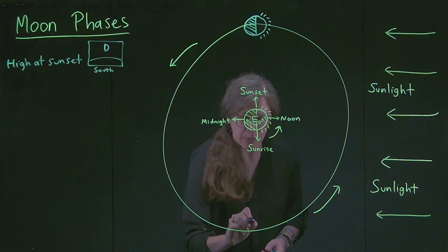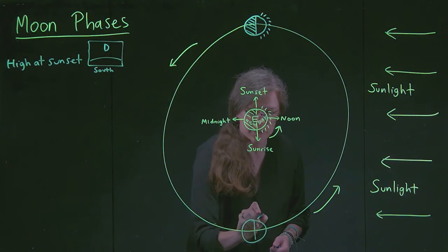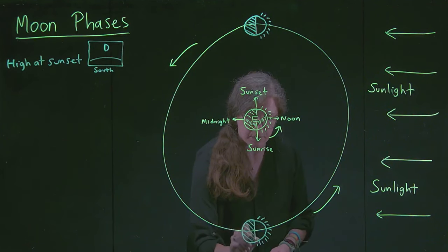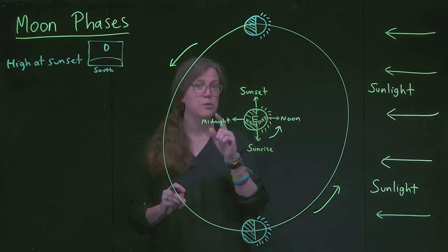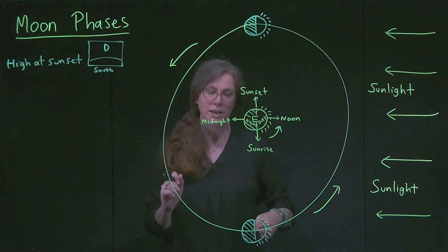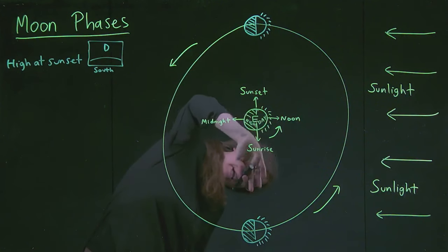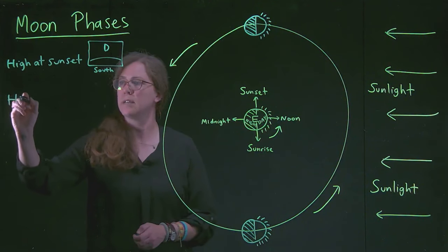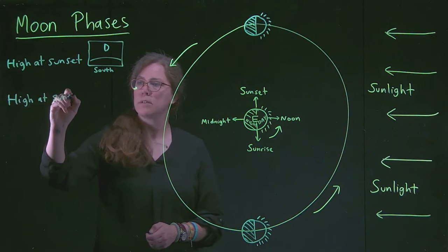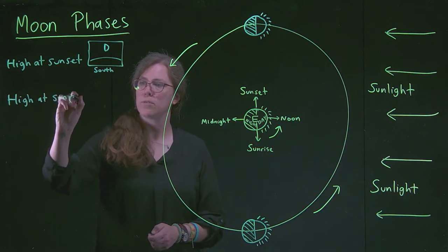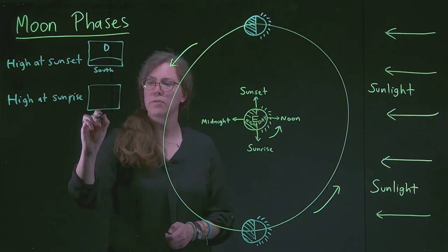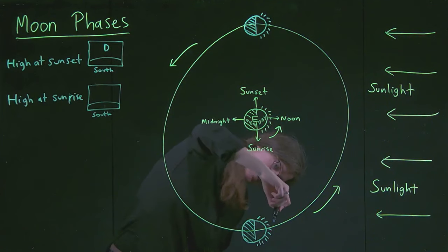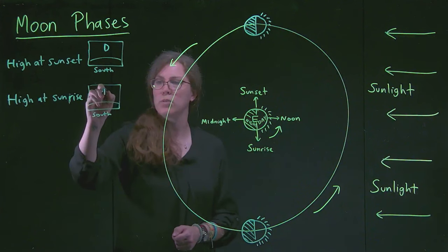If we think about the Moon on the bottom of our diagram instead, this is still the side that's lit up — remember the sunlight is coming in from the right — and this is still the side that is dark. If I try to view it from that angle, I can see that the left side is lit up from my point of view and the right side is dark. So high at sunrise, facing south to catch the Moon high in the sky, the left side would be lit up and we'd get a Moon that looks like that.